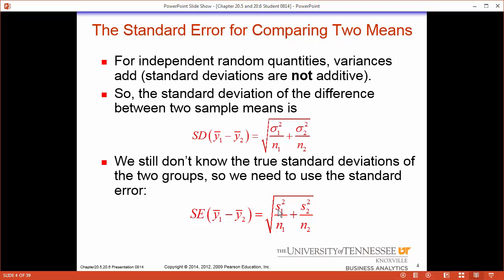Using the sample standard deviation will change us from a standard deviation to a standard error. This is the standard error of the differences between the means and it would be calculated with the following formula. This formula is eerily similar to our s over square root of n formula, or sigma over square root of n. If you square both of these you get basically the formula we're looking at with one sample. Very similar to what we've done previously but this time it's for two samples.